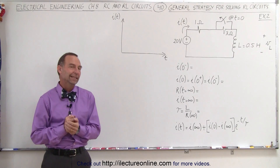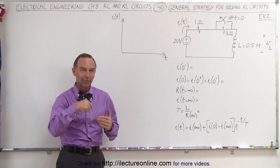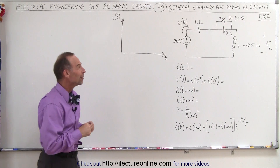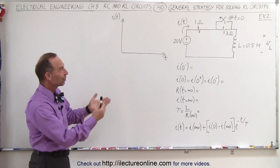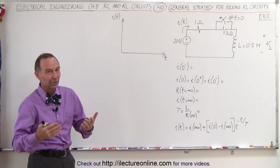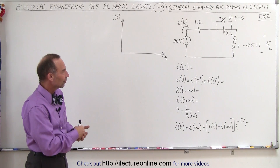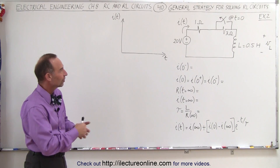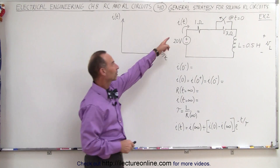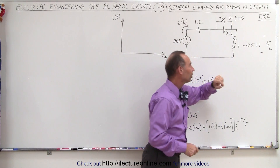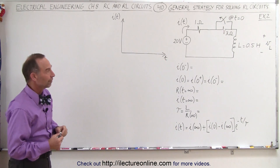Welcome to ElectronLine. Nothing like an example to show you how the previous video actually makes sense. So here we have a similar situation, but instead of using general symbols, we're going to use actual values for the resistance, the inductance, and the voltage supply. We're going to try to find the current and the voltage — the current through the inductor and the voltage across the inductor.